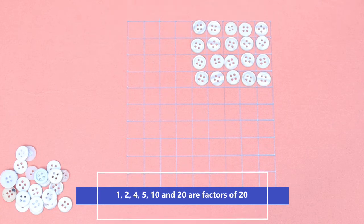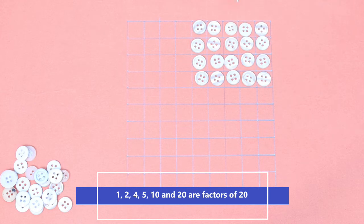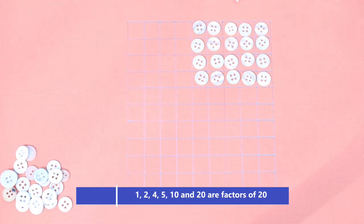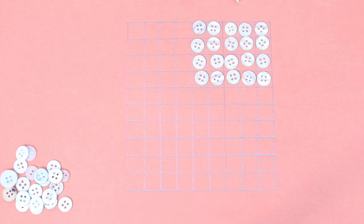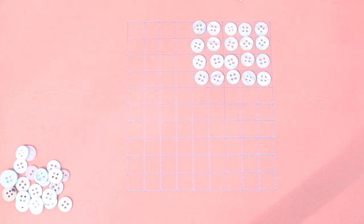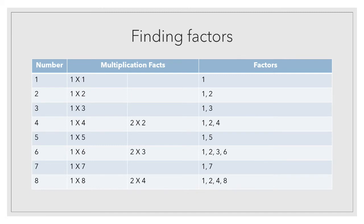I arranged twenty buttons in different rectangles. The first was one row of twenty buttons: one twenty is twenty. Then two rows of ten buttons each: two tens are twenty. Then four rows of five buttons each: four fives are twenty and five fours are twenty. Now I am going to explain all these things further with the help of a PowerPoint presentation.